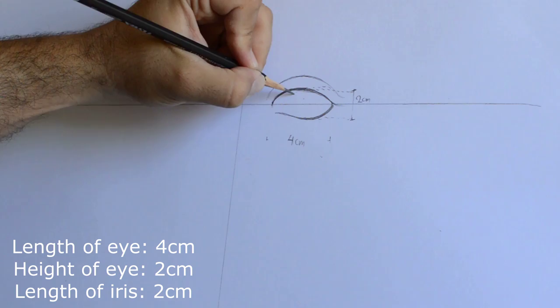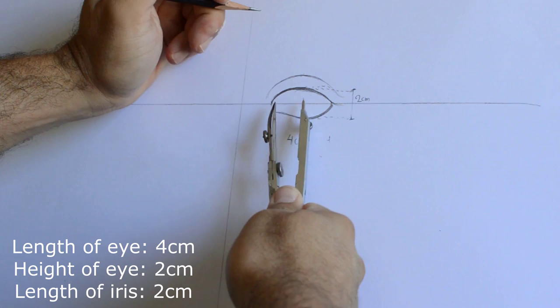Of course when we draw, nothing is written in stone. The eyes can vary a little bit. So I'm just showing you a basic classic eye.